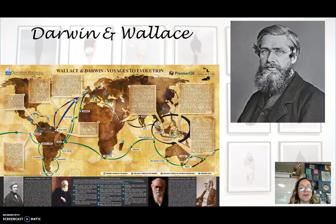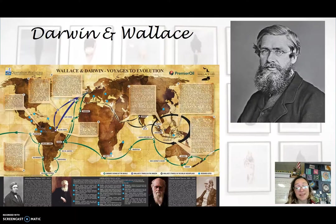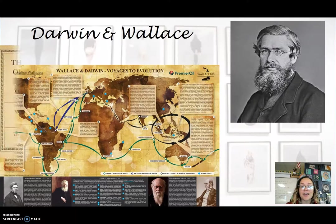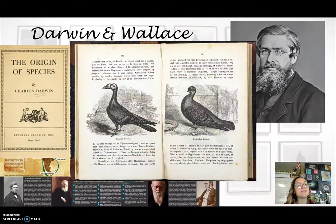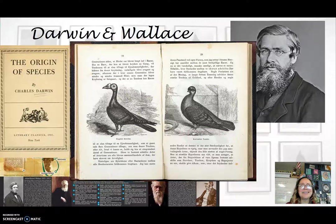Darwin's publication of The Origin of Species was more of a reluctant one. There was another naturalist, Alfred Russell Wallace, studying populations in Indonesia, who actually spurred Darwin to get noticed for his hypothesis of natural selection. Therefore, he published The Origin of Species in 1858.